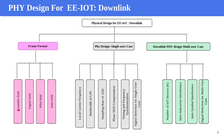The physical design for the single-user case includes local carrier frequency, bandwidth of low-pass filter, sampling rate of digital-to-analog converter, phase shift compensation, timing and frequency synchronization, and signal detection for a single-user case, which consists of two steps: channel estimation and channel equalization.